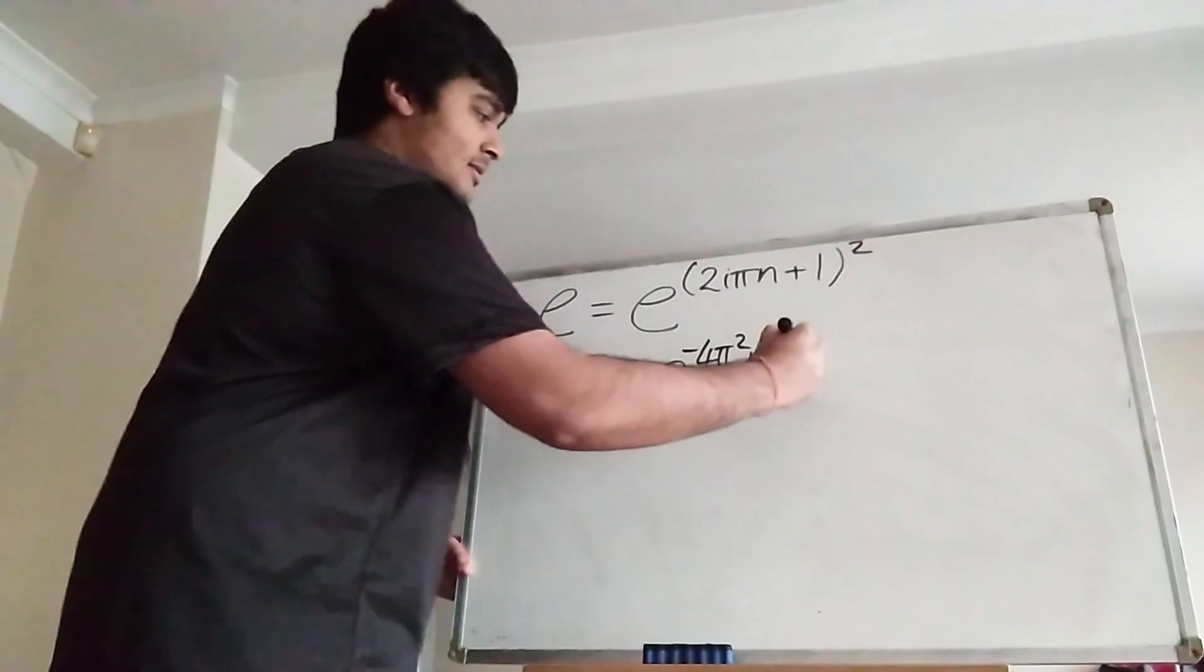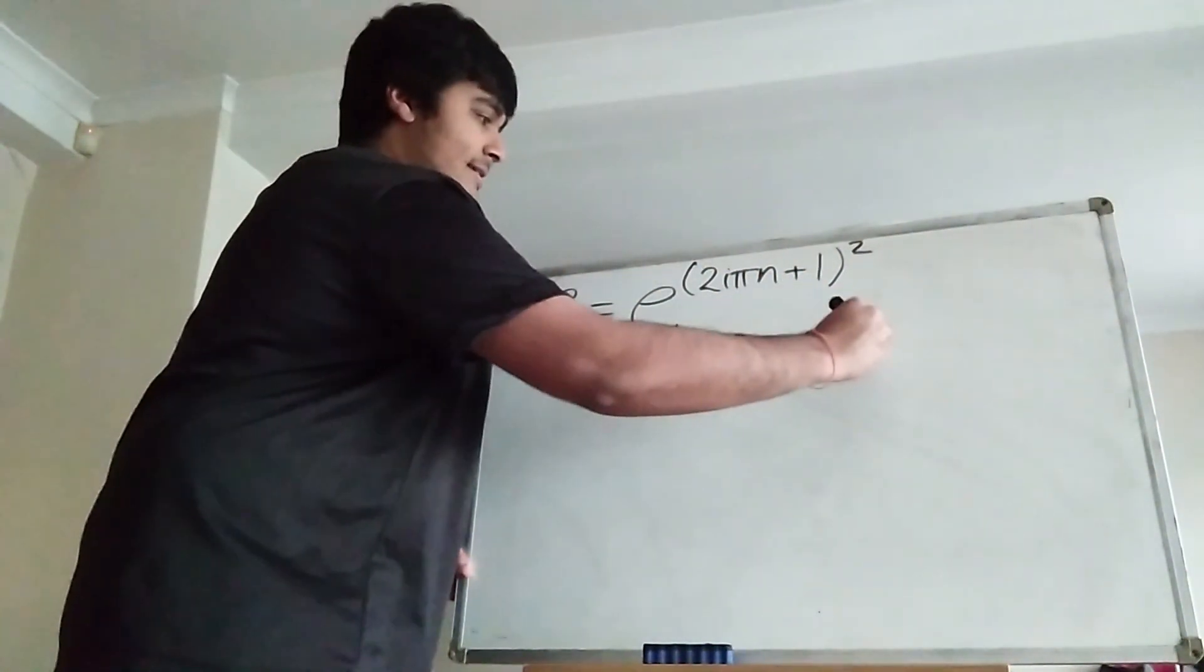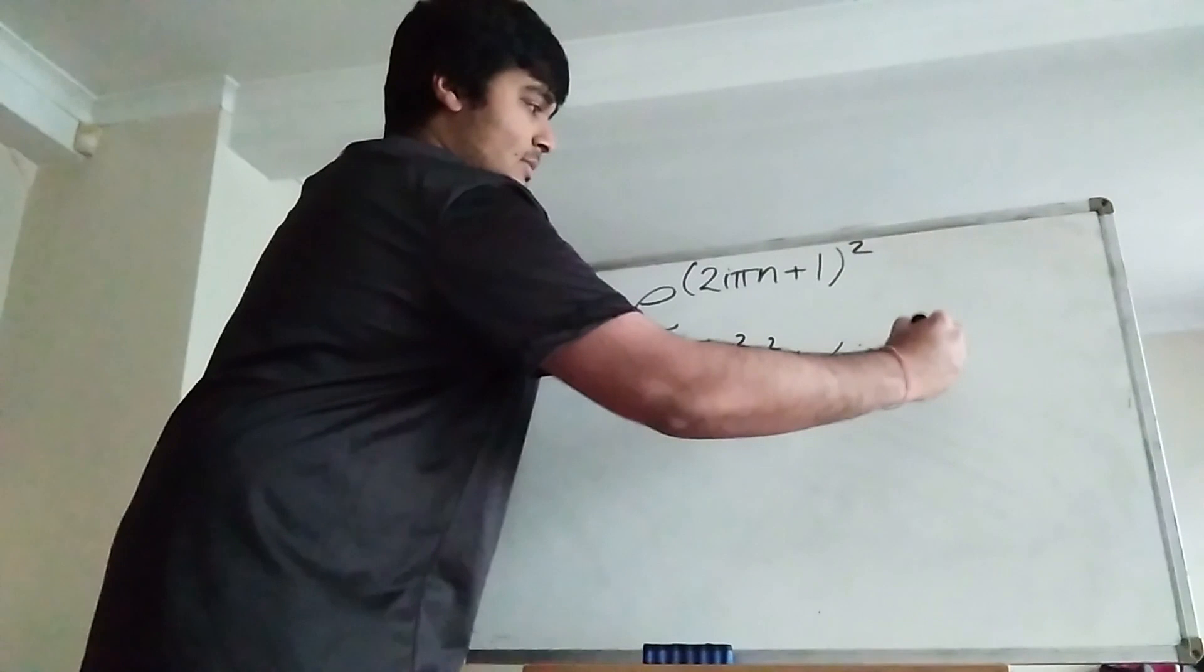Okay, then plus 2 times that times that, so that's plus 4i pi n, and then just plus 1 squared, which is plus 1.